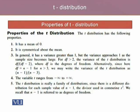Alternatively, since here degree of freedom is n minus 1, for n greater than 3, we may write the variance of the T-distribution as n minus 1 divided by n minus 3.